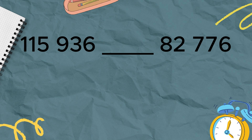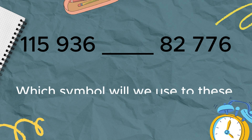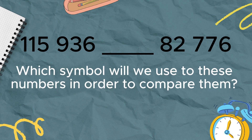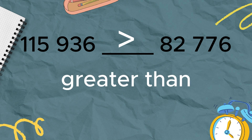How about these two numbers? Which is the bigger number? Why? Very good! This number has 6 digits, while this number has 5 digits. Again, when two numbers are compared, the larger number is the one with more digits. So we don't need to compare each digit this time. We use greater than because 115,936 is greater than 82,776.